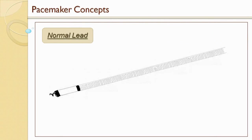Here we see a normal pacemaker lead. Leads typically have a silicone or polyurethane, or maybe some combination of the two, outer insulation. Running down that insulation are a couple of conductor wires: one wire running down to the tip, which is the cathode and is negative, and another wire running down to the anode, which is positive. When we pace, that current travels down the conductor, out the cathode, and back into the anode, hopefully capturing cardiac tissue in between the two.